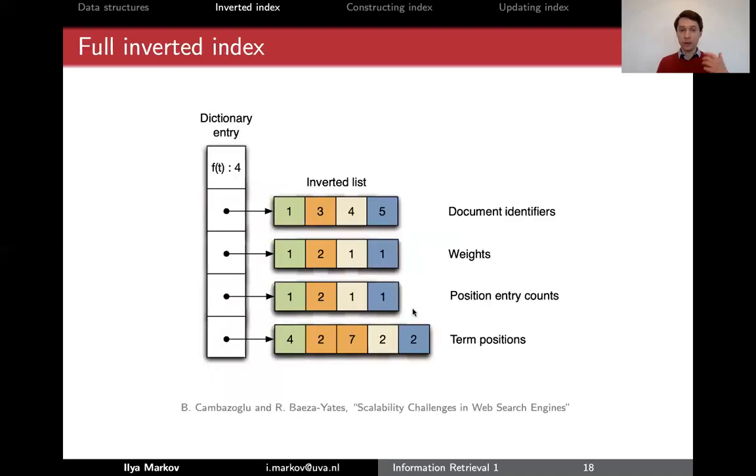Now in reality you may want to store different types of information at once for every term. So let's say we have a term, a dictionary entry for a term T, and then we store both document IDs, so that means the term T occurs in documents one, three, four, five. We store weights which could be term frequencies, once in document one, twice in document three and so on.